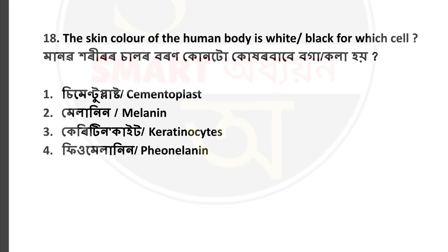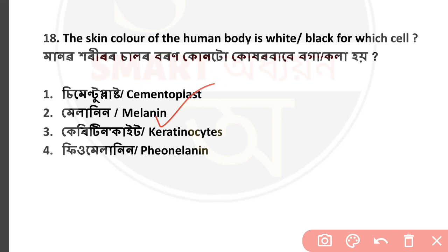Question number 18: The skin color of the human body is white or black — what causes this? The answer is melanin. Due to melanin, our skin color becomes white or black.